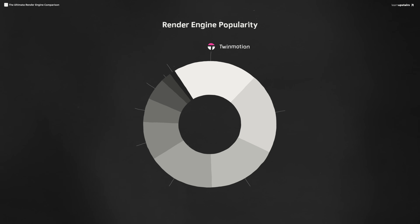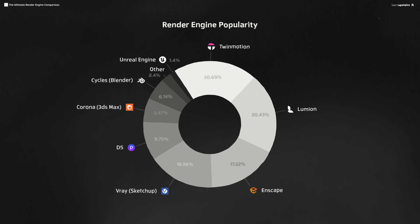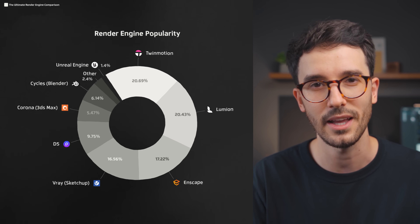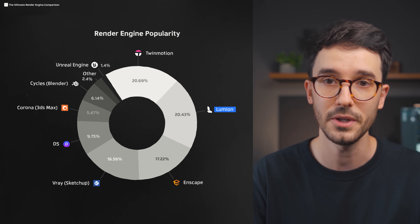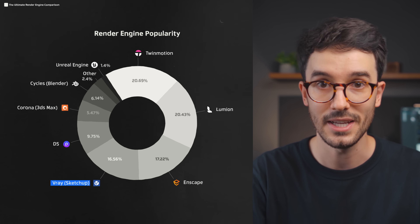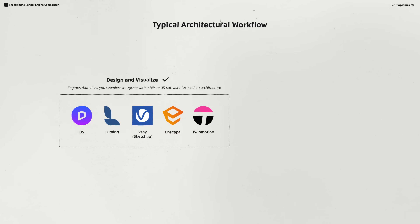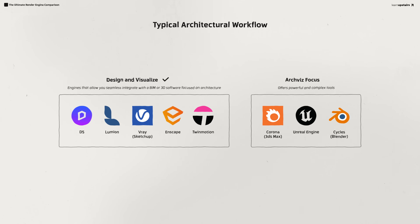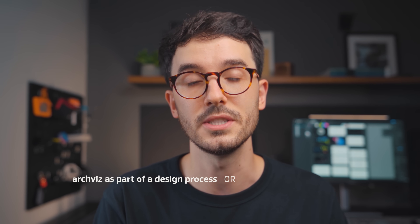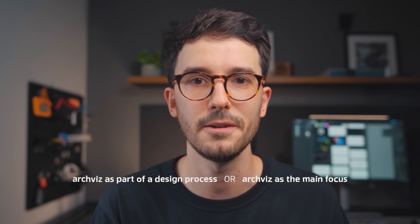Based on the survey I have put up, these are the results on the render engine popularity. Which is not a surprise to me, to be honest. We've got Twinmotion with a slight edge here, but not following too far behind is Lumion, Enscape, V-Ray and D5 included. Those are what most fit into a typical architectural workflow where you need to design and visualize at the same time. More advanced engines like Corona, Unreal Engine and Cycles are more powerful with complex tools and allow a ton of procedural stuff.